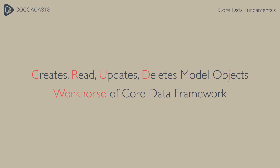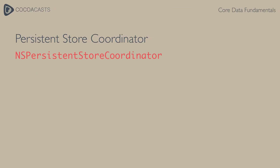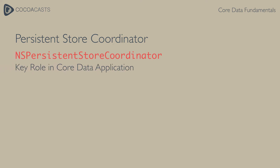The persistent store coordinator is represented by an instance of the NSPersistentStoreCoordinator class and it plays a key role in every Core Data application. While it is possible to have multiple persistent store coordinators, most applications have only one.